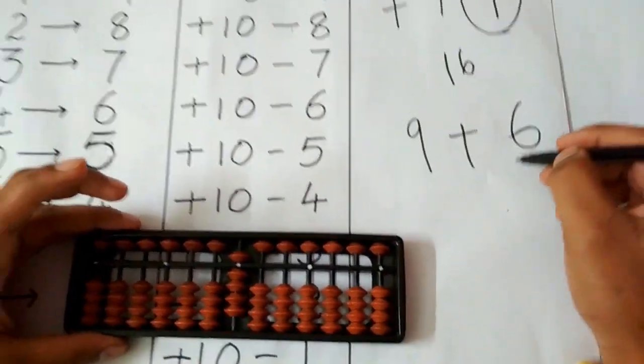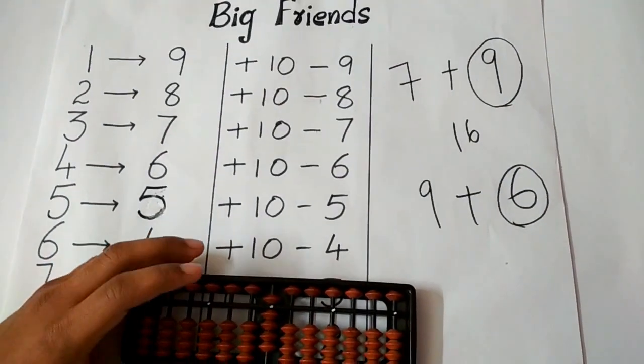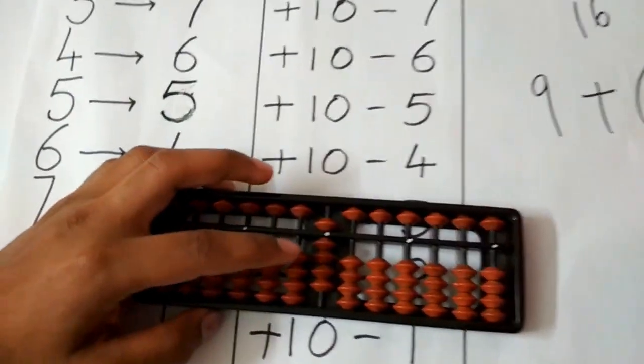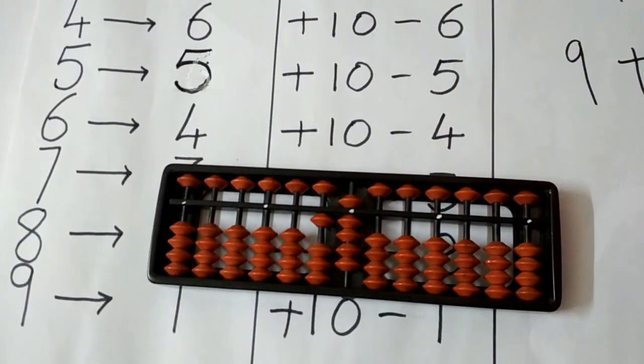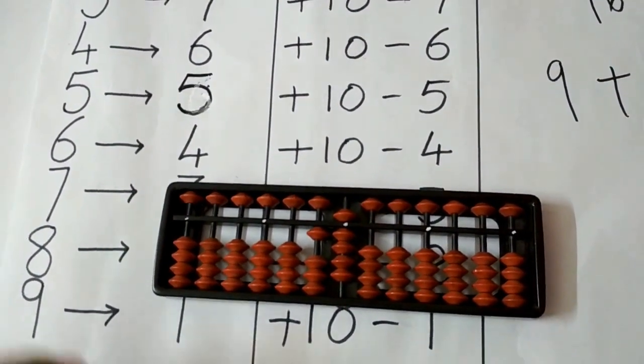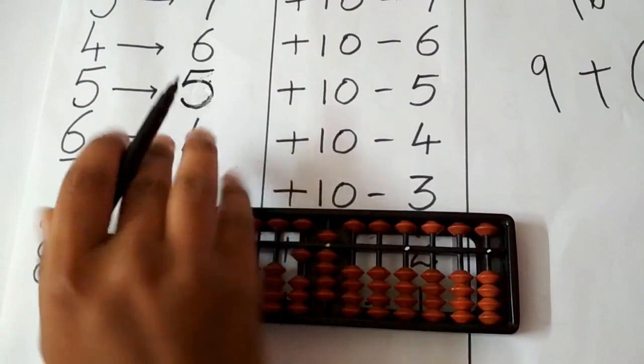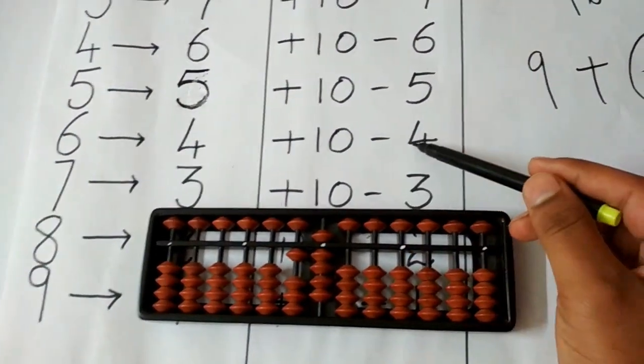Now we have to add 6 on abacus. The second step includes addition of 10. We have to check who is the friend of 6. We see that friend of 6 is 4 and the steps include plus 10 minus 4.